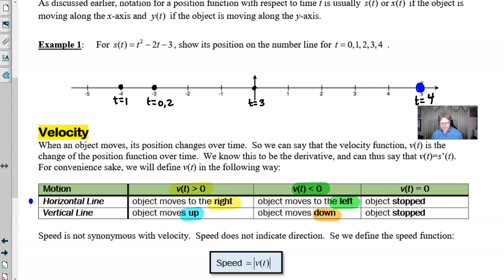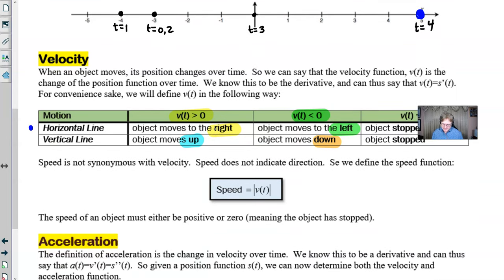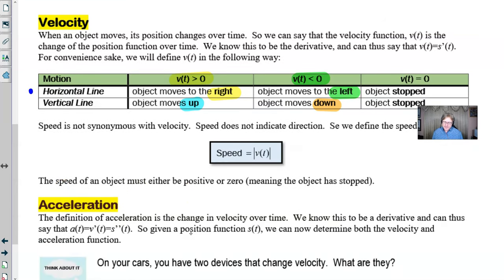Speed: the common misconception with speed is that speed is the same as velocity, but that's not really the case. Speed, unlike velocity, doesn't need a direction. It's not a vector. We don't really care what direction we're going. We only focus on the absolute value of that velocity, whether it was left, right, up, or down. So we always think of speed as just that, the absolute value of velocity. You'll never have a speed that's necessarily a negative number. The speed of an object must either be positive or zero.